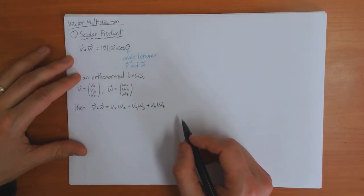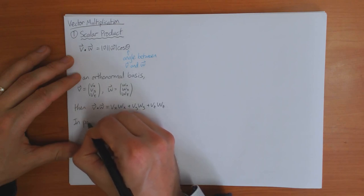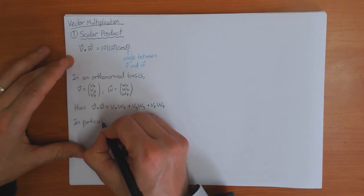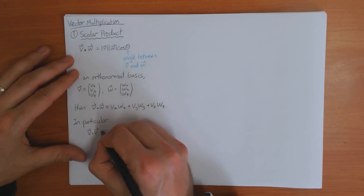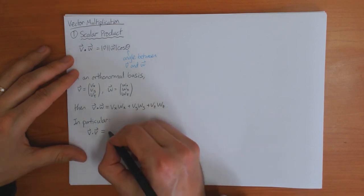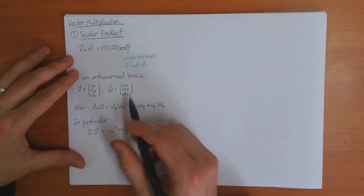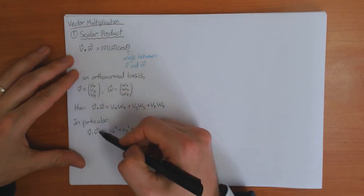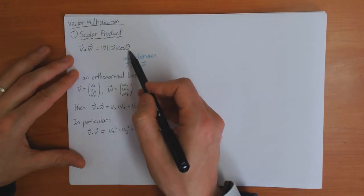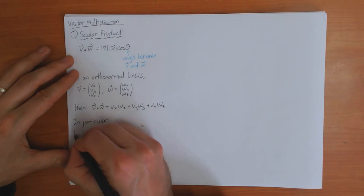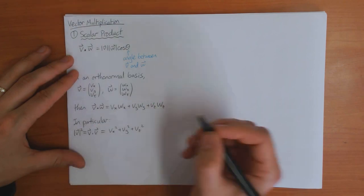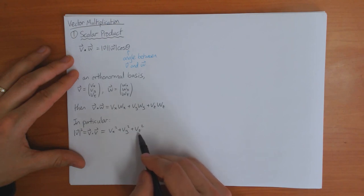Now a couple of special cases. Suppose that v and w are the same vector. Then you get that v dot v is equal to, from this result here, vx squared plus vy squared plus vz squared. But from this definition here, the angle between v and itself is zero. So therefore, cos of zero is one. So I just get length of v squared here.